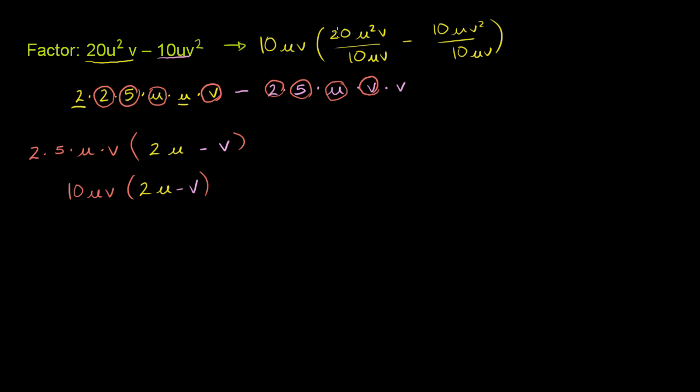We could say that 20 divided by 10 is just 2, u squared divided by u is just u, v divided by v is just 1, 10 divided by 10 is 1, u divided by u is 1, v squared divided by v is just v to the first power. So you're left with 10uv times the quantity 2u minus v. Either way, you get the same answer.